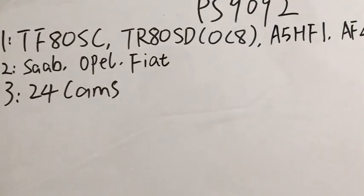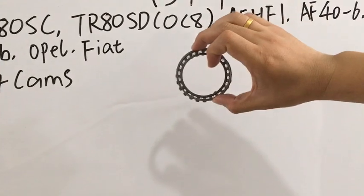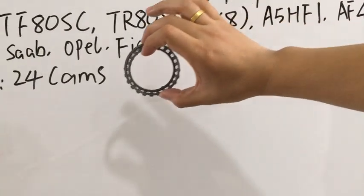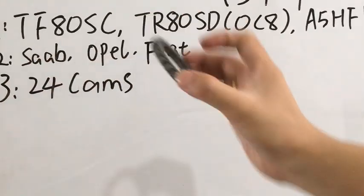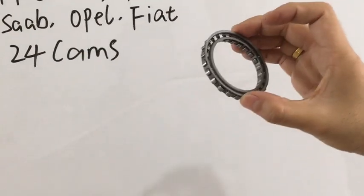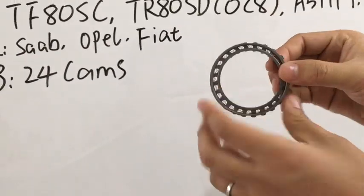You can see they are very widely used. It's a very popular sprag and also you can see the cars they are used in, something like Fiat, Opel, Saab. They are 24 cams.